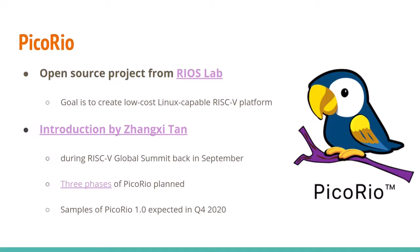Something more practical coming up is a project called PicoRio, from an organization called RiosLab based in China — a collaboration between a university there and Berkeley. Their goal is to create a low-cost Linux-capable RISC-V platform, introduced at the RISC-V Global Summit in September with three phases planned. The first phase has samples expected by end of year, which is exciting. The idea of more affordable boards is really exciting because we want to get as many people as possible trying RISC-V and porting software to make it more widespread.